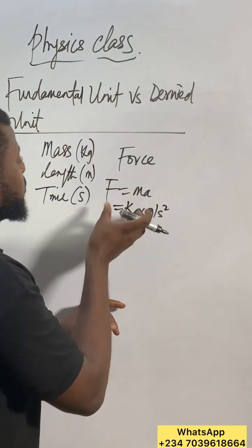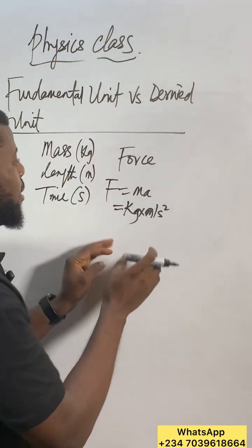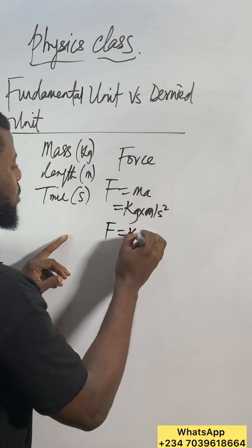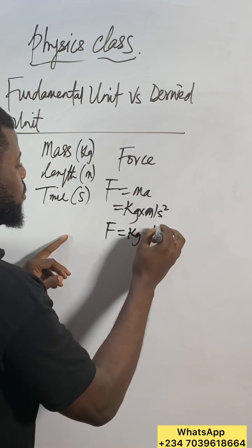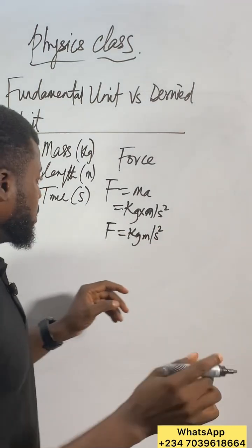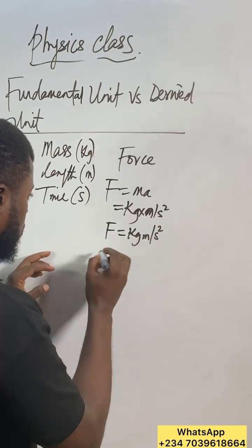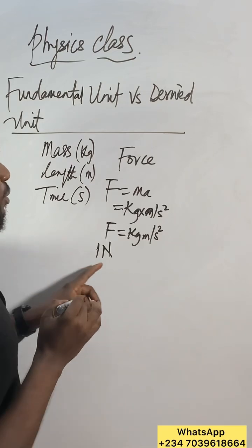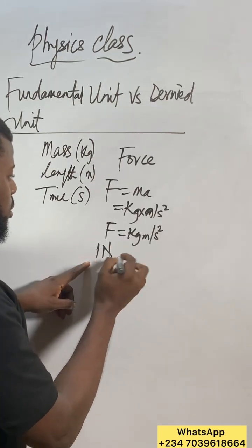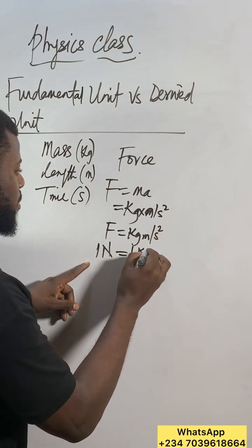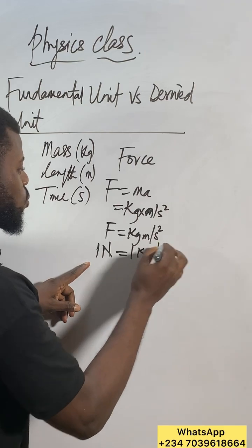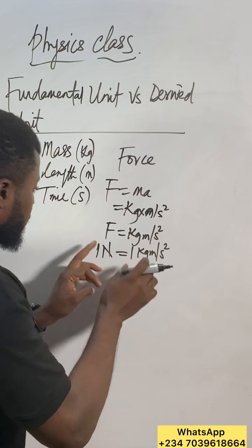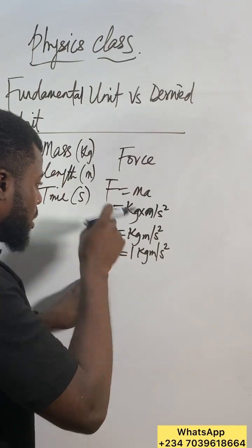I borrow everything from the fundamental to carry this particular one. So if you put everything together, the unit is going to be kilogram meter per second squared. This produces Newton. One Newton equals one kilogram meter per second squared. This is the derived unit - you have fundamental units inside the derived quantity.